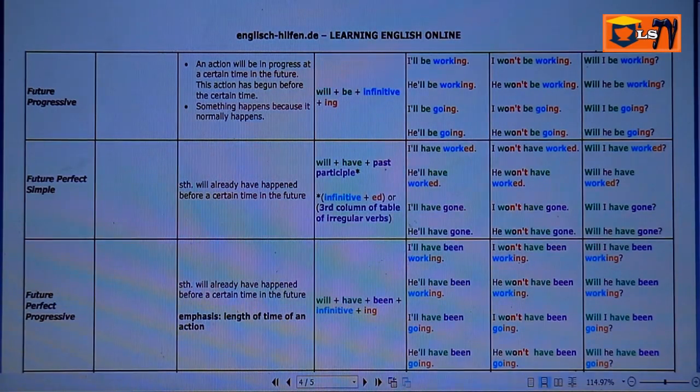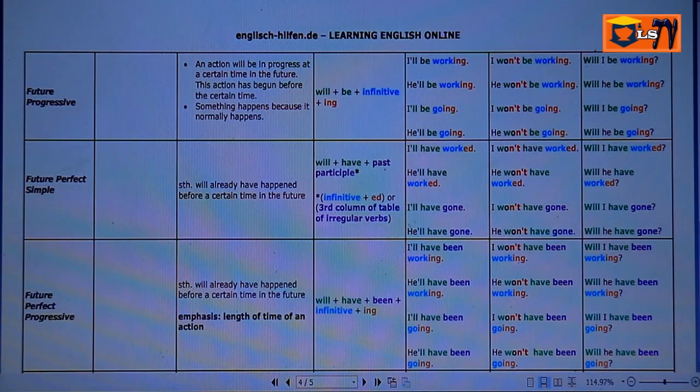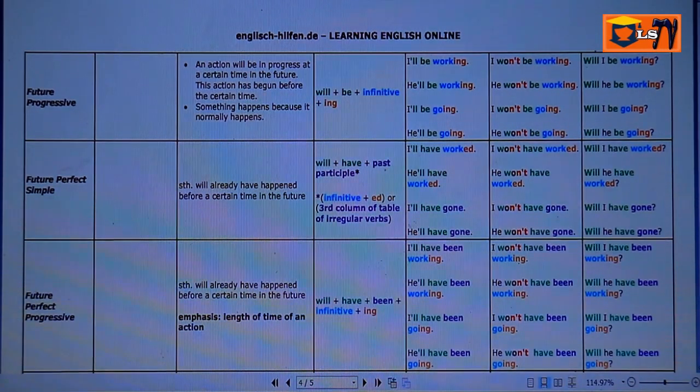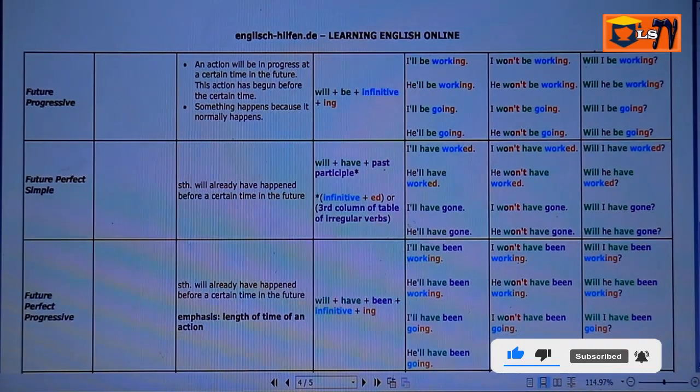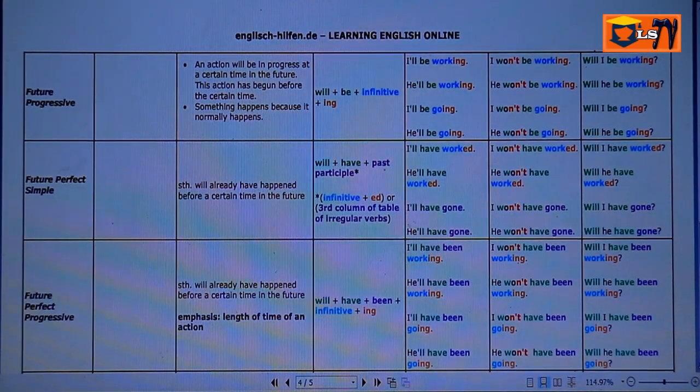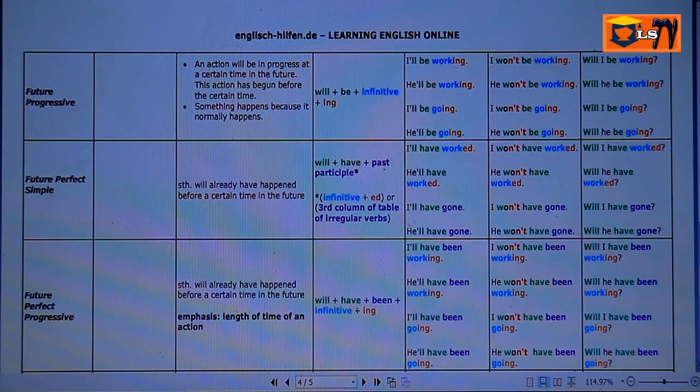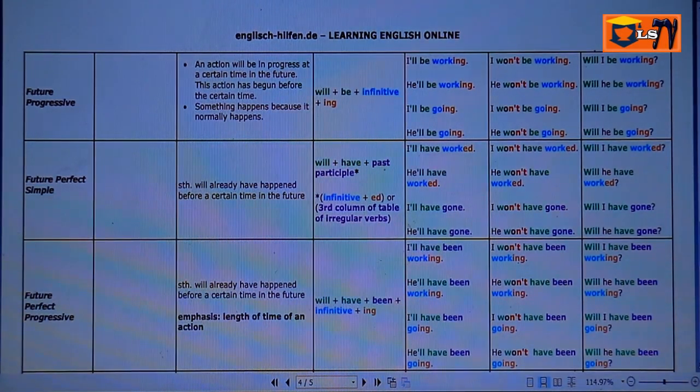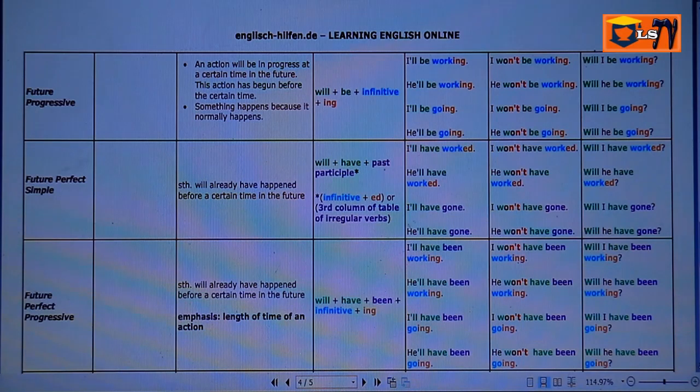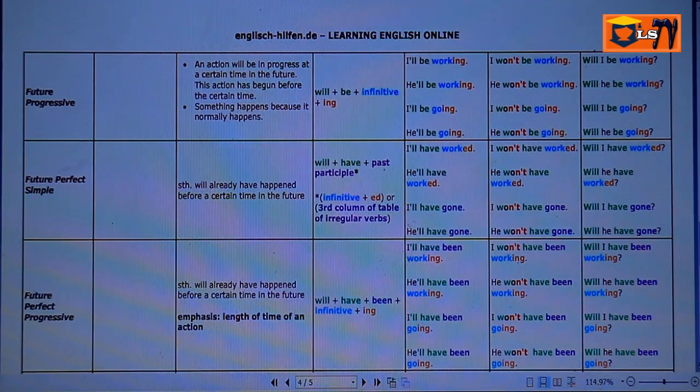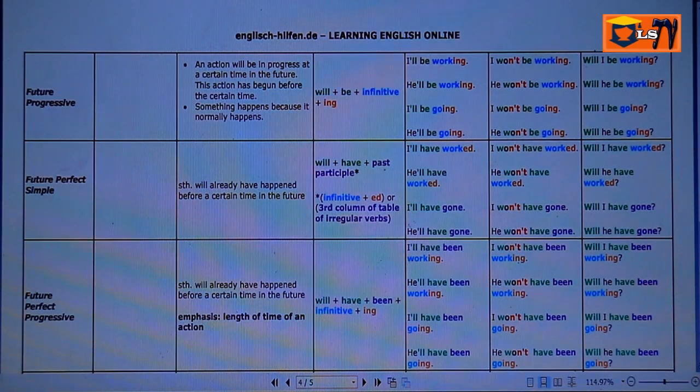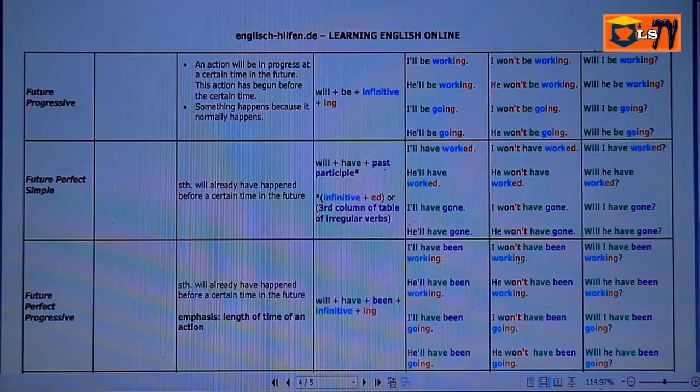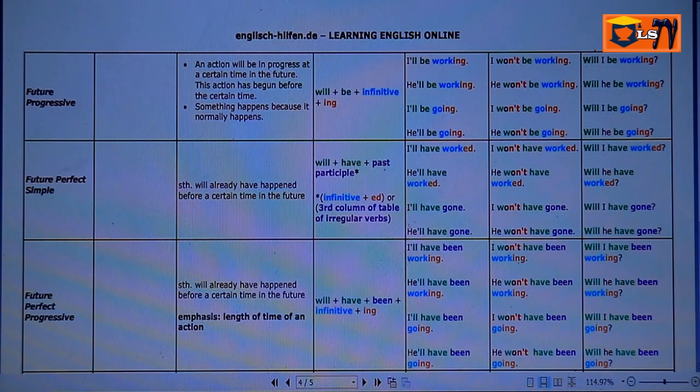Future Progressive. Let us look at the use of Future Progressive. As you know, the word progressive comes from verb to progress. In other words, it means to continue. Progressive is the process of continuing an activity. In the use, an action will be in progress at a certain time in the future.